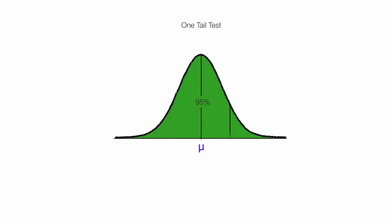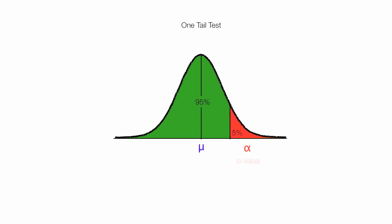I can also have a one-tail test with the red area to the right of the population mean. There's a 95% chance a randomly selected sample mean will be in the green area, and there is a 5% chance it will appear in the red area. The red area is often called alpha, referred to as alpha or the p-value, and we refer to it also as the rejection region.